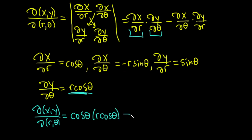And then minus del x del theta, that's going to be right here. So negative r sine theta. And then del y del r, which is right here. So sine theta.